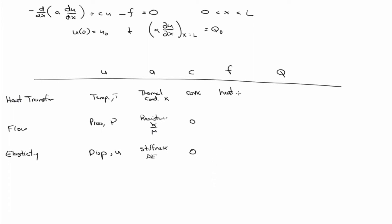F is where if you had a distributed heat generation, you could also have a distributed generation in a flow problem. This would be, in elasticity, an axial force distribution. And then your Q would be some point heat source, some point pressure source, some point load.